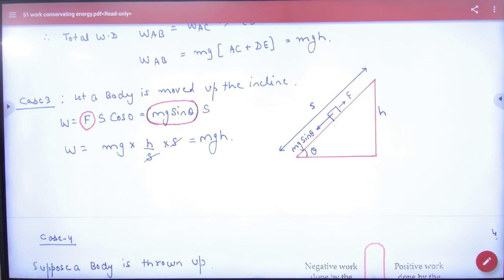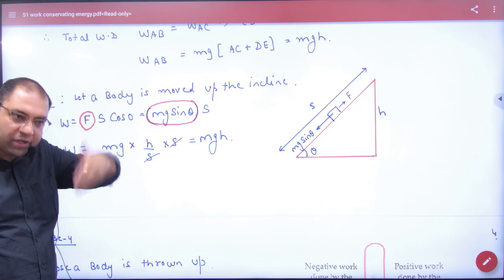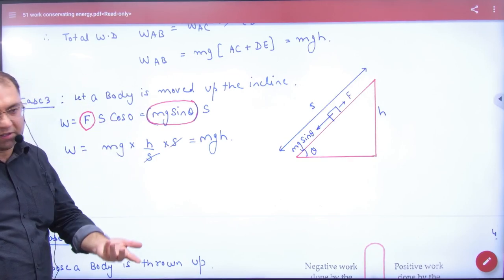To pehle case mein bhi, doosre case mein bhi, teesre case mein bhi, work done kya exactly same. To iska matlab path matter nahi kar raha. Kya matter kar raha hai? Initial or final position h. To ye gravitation ki force kya hai? Conservative.